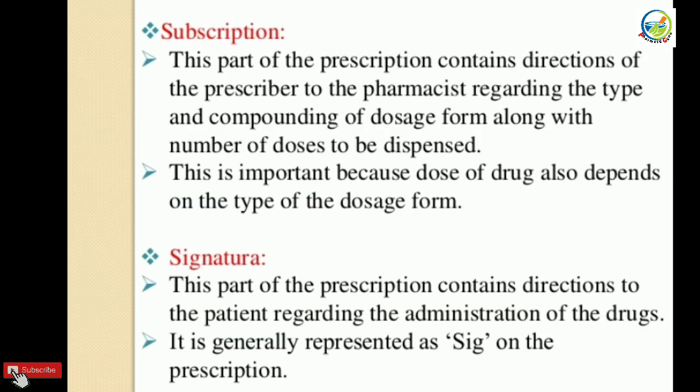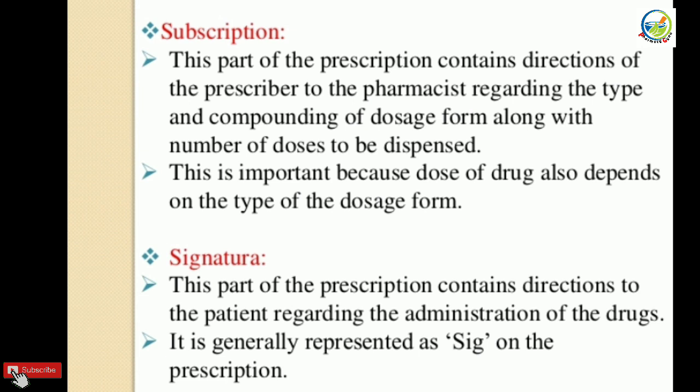The next part is subscription. This part of the prescription contains directions from the prescriber to the pharmacist regarding the type and compounding of the dosage form, along with the number of doses to be dispensed. Subscription ek direction hai prescriber ki taraf se pharmacist ko, jo related hai compounding of the dosage form aur kitne doses form dispense karne hain. Yeh bohot important part hai kyunki drugs ka dose, dosage form ke upar nirbhar karta hai.